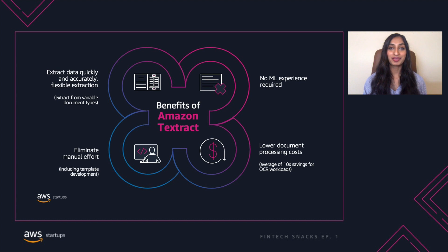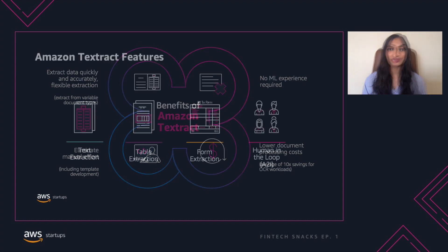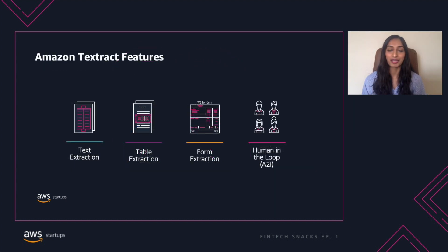Amazon Textract is a fully managed machine learning service that allows you to extract printed text, handwriting, and other data from scanned documents. It allows you to accurately and quickly extract text from various documents while eliminating manual effort and lowering costs. Machine learning experience isn't required to use Textract. It also goes beyond traditional OCR by being able to identify, understand, and extract data from forms and tables — without your developers having to first create template-based input. You can even leverage Amazon A2i, which provides human oversight to ensure and continuously improve accuracy by combining the scale of Textract with the human accuracy of Amazon A2i.